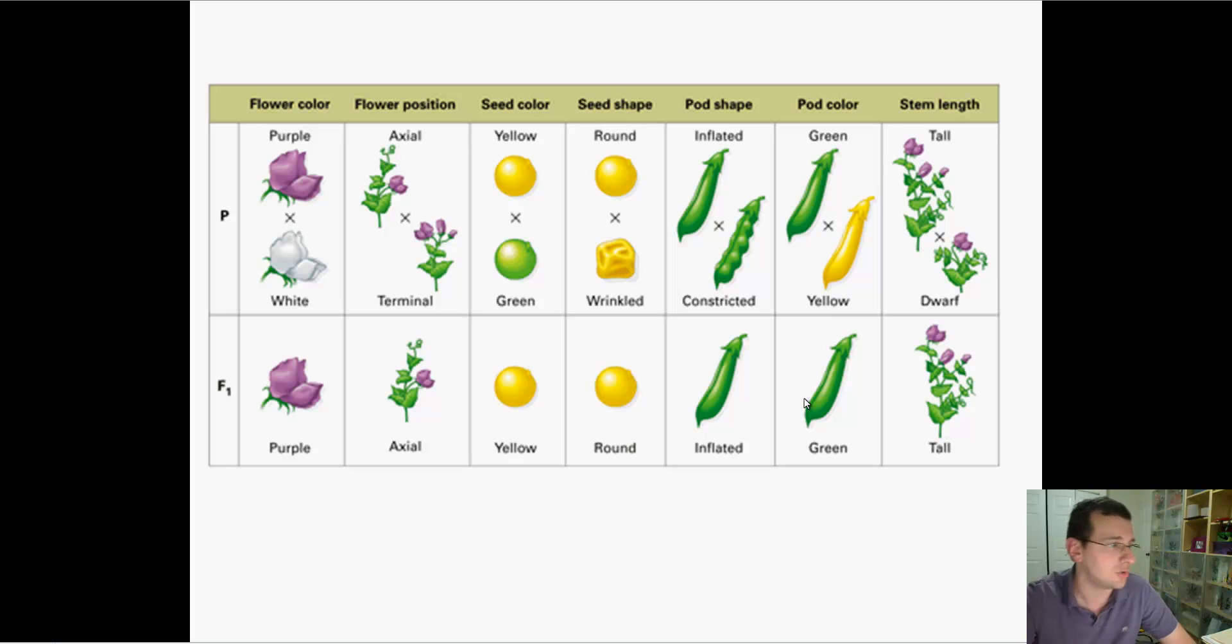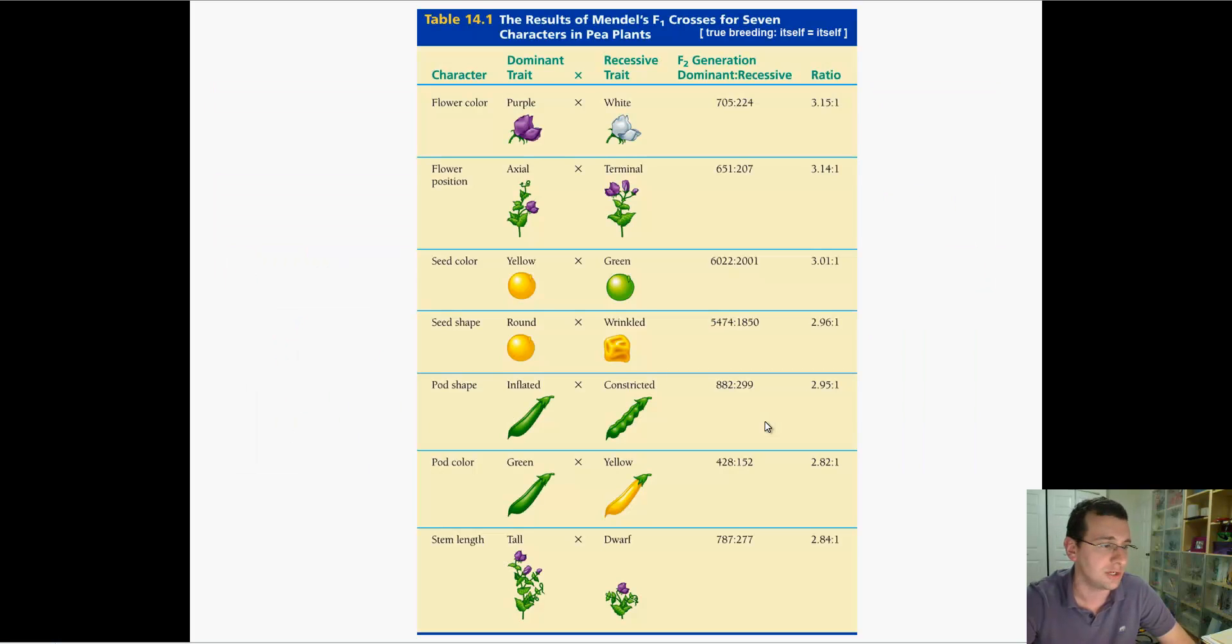Actually, remember that Mendel did this for many, many traits. He looked at all these 7 traits and did this over and over again, and every time the dominant one made the F1 generation look exactly the same. When he got those and self-crossed them or crossed them with offspring from the same generation, he got every time a 3 to 1 ratio. Notice the numbers here. He actually tried this thousands of times because he needed a lot of data. In science, you always repeat, repeat, repeat to verify. This is based on the average of thousands of crosses with thousands of peas over 7 years' worth of research. When everything is said and done, it got very close to an actual 3 to 1 ratio.